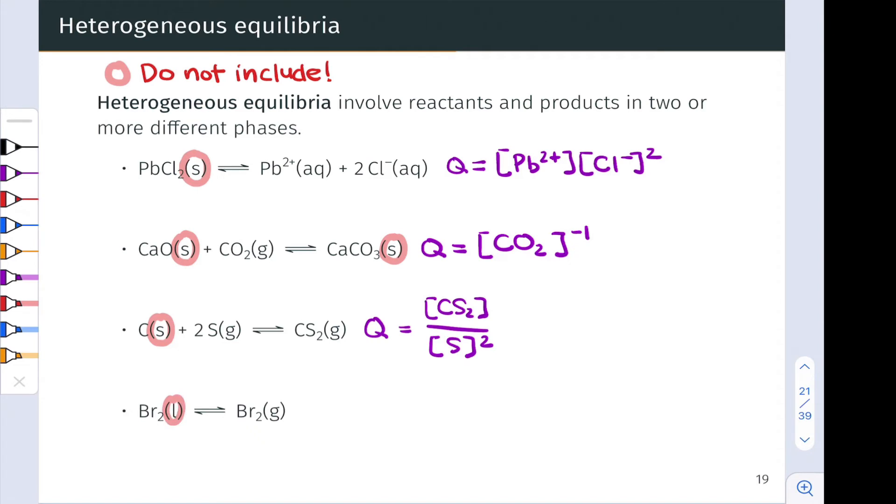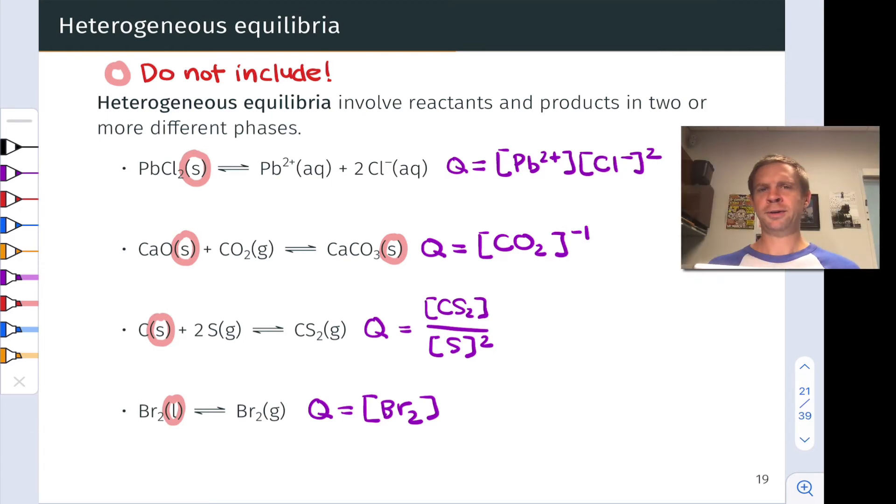And finally, we have pure liquid bromine on the reactant side here, and gaseous bromine on the product side. So the reaction quotient here is simply equal to the molarity of Br2 to the first power because the coefficient on Br2 is equal to 1. So looking a little bit funky, but keep in mind that wherever we omit these species, you can imagine there's a 1 there. So Br2 molarity divided by 1, 1 divided by CO2 molarity in the second case.